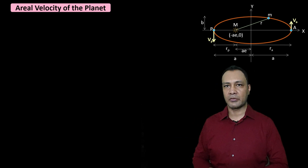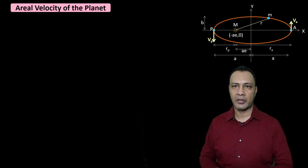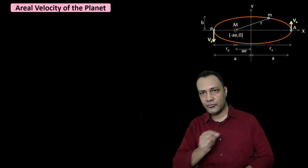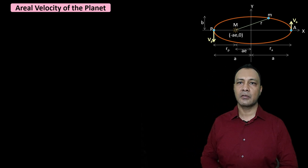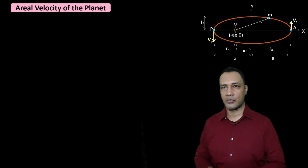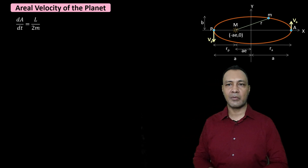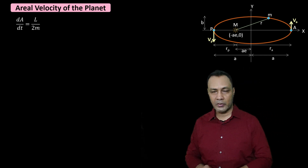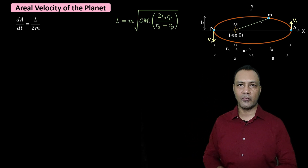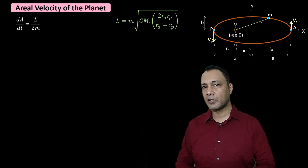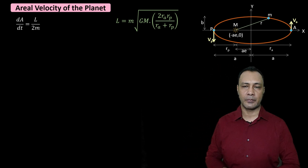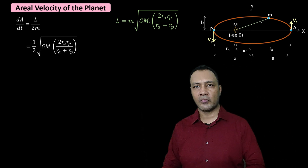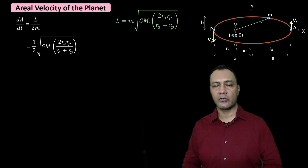Now let's talk about aerial velocity. From Kepler's second law, the aerial velocity of a planet is constant — meaning the rate at which the planet sweeps out area about the Sun is constant. The value of aerial velocity is dA/dt = L / (2m), where L is the angular momentum and m is the mass of the planet. Substituting the expression for L, we get dA/dt = ½ × √(GM × 2·Ra·Rp / (Ra + Rp)).